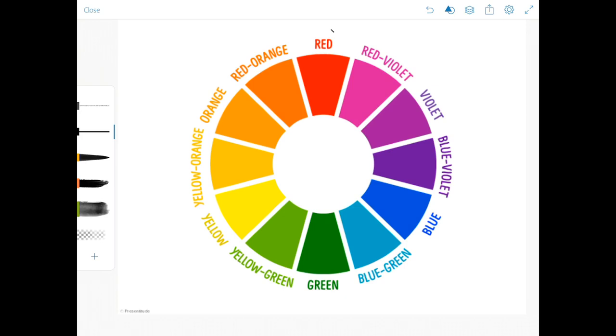For example, if we started with red and we wanted to use analogous colors, we could go around the color wheel one or two spaces in either direction, but we definitely do not want to go all the way across. So if red is my base color, I could also use orange, violet, and colors in between like red-orange and red-violet.